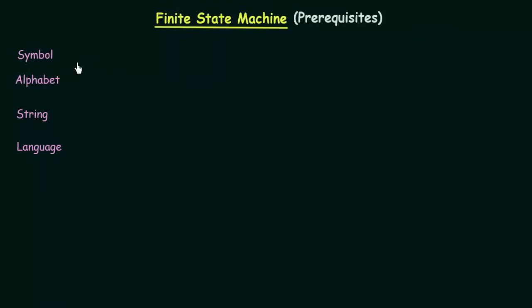Hello everyone. Welcome to the next lecture in the course Theory of Computation. In the last lecture we saw an introduction about the course. In this lecture we will be studying some prerequisites — basic important things you need to know before starting with finite state machines. We will study terms like Symbol, Alphabet, String, and Language.